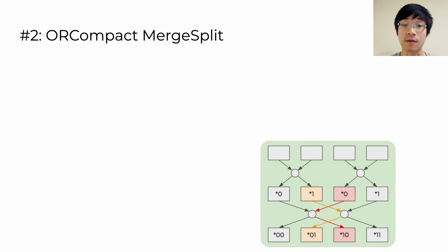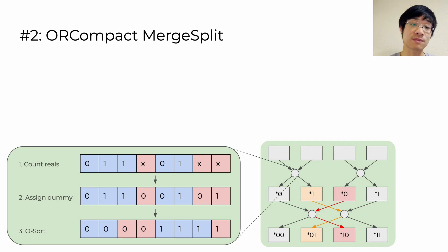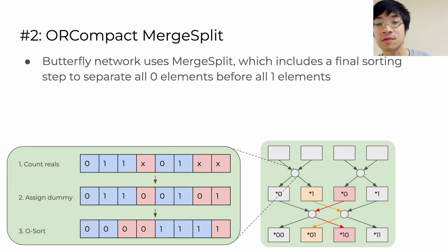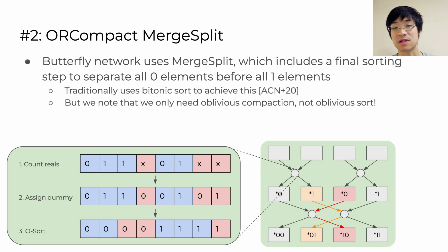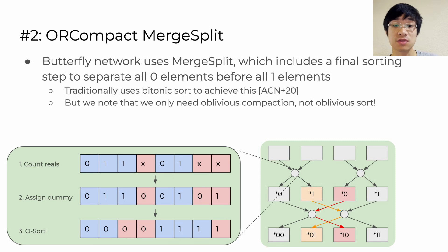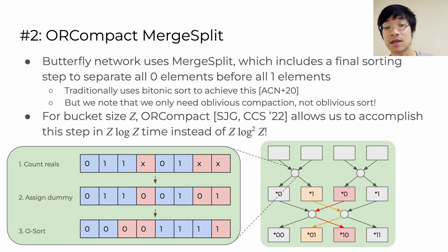Next is an improvement to the merge-split operator, the little circle operator at the heart of the butterfly network. It takes in two buckets and outputs two buckets sorted by one of the bits of its random keys. The last step uses an oblivious sort to sort all zero elements before one elements. Traditionally we use bitonic sort to achieve this, but our observation is that an oblivious sort is actually unnecessary. Since we're just separating zeros and ones, all we really need is an oblivious compaction rather than a full oblivious sort. There's a very efficient oblivious compaction algorithm that came out in CCS '22 by Sassy et al. that we can leverage here.